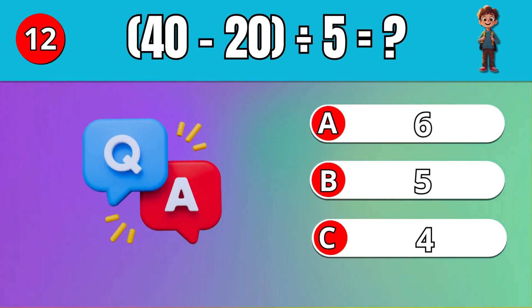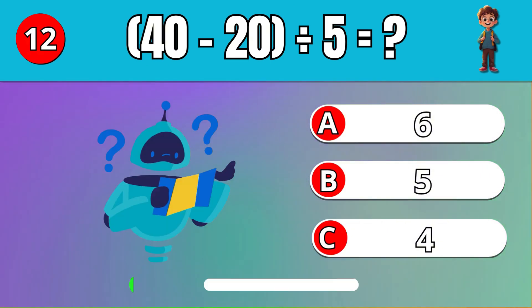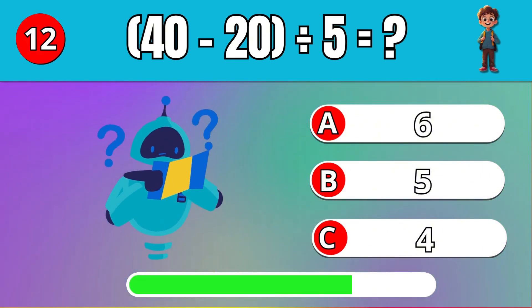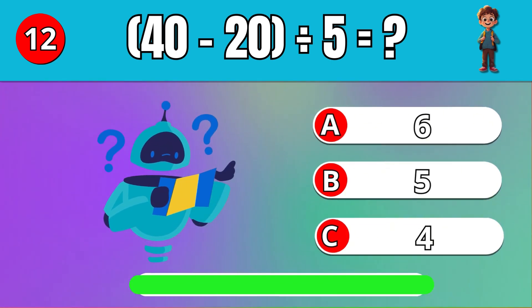What is the result of 40 minus 20 divided by 5? 4.